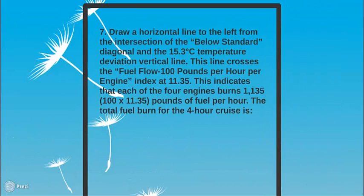Seventh step: draw a horizontal line to the left from the intersection of the below standard diagonal and the 15.3 degrees Celsius temperature deviation vertical line. This line crosses the fuel flow 100 pounds per hour per engine index at 11.35.